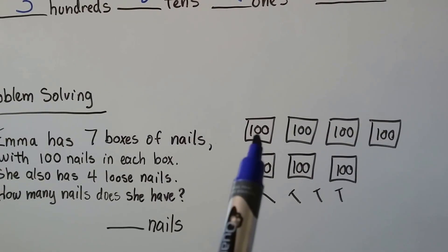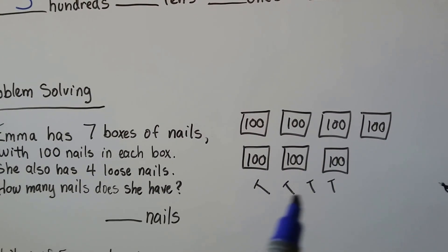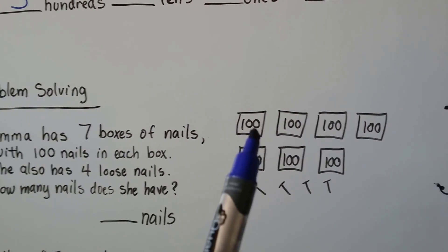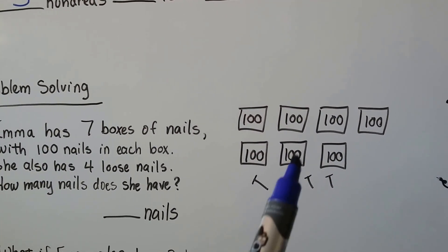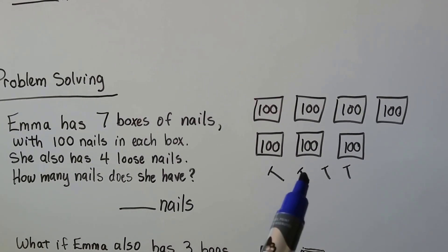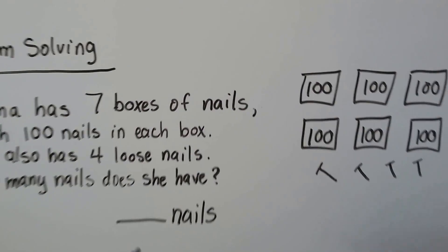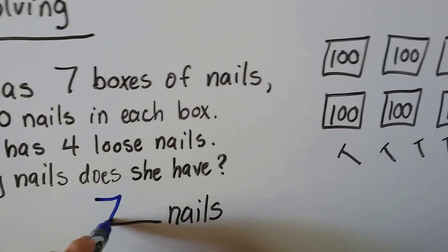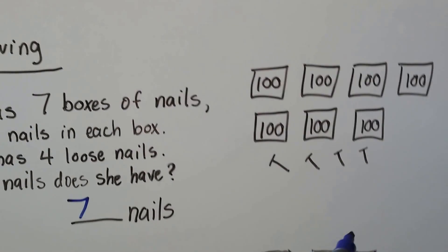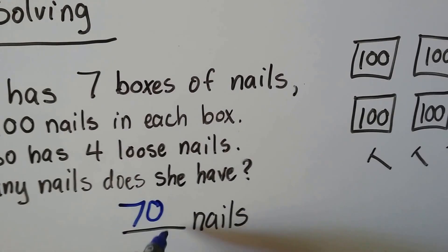So I drew these seven boxes and I put 100 on each one, and then I drew the four loose nails. We can count by hundreds: 100, 200, 300, 400, 500, 600, 700, seven hundred one, 702, 703, 704. She has 704 nails. She has seven hundreds, there's no tens, and she has four ones. So we write a zero for the tens place and a four for the ones place. She has 704 nails.